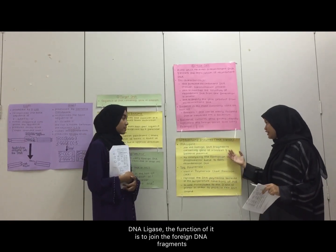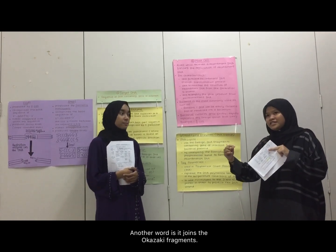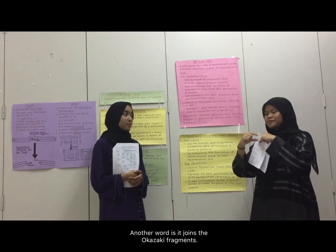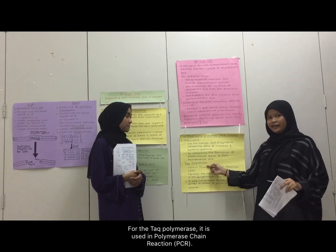The last tool is DNA ligase. The function of it is to join the foreign DNA fragments containing the gene of interest and bacteria plasmid. In other words, it joins the complementary sections by catalyzing the formation of a phosphodiester bond, which is also known as a covalent bond, to form recombinant DNA.